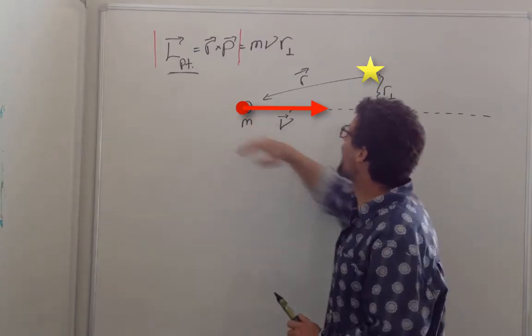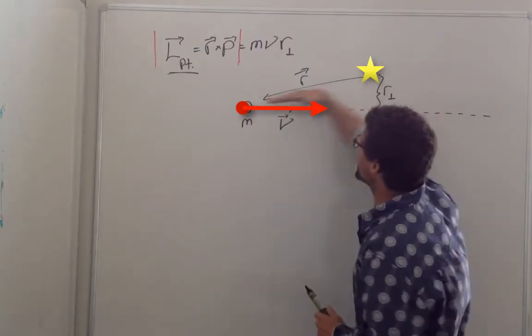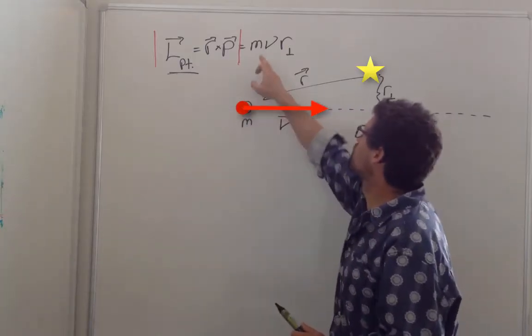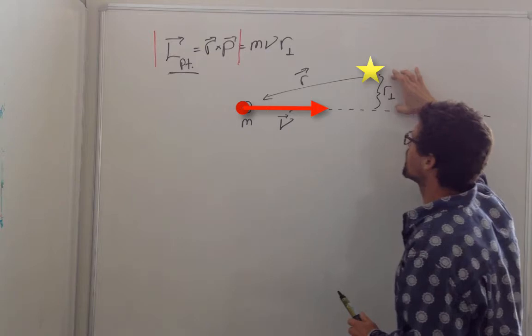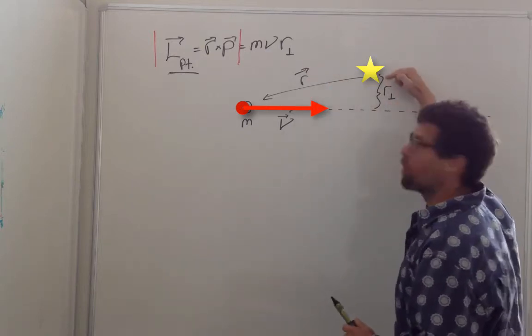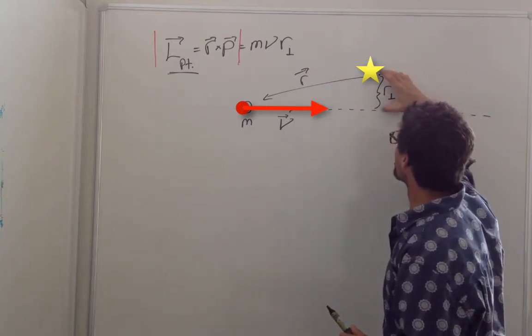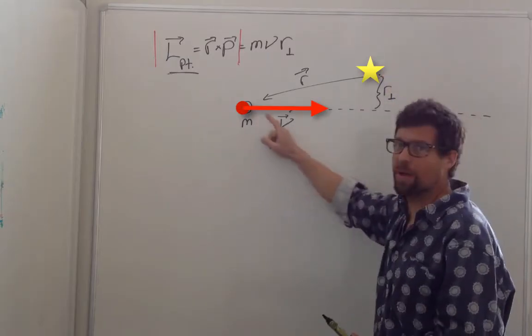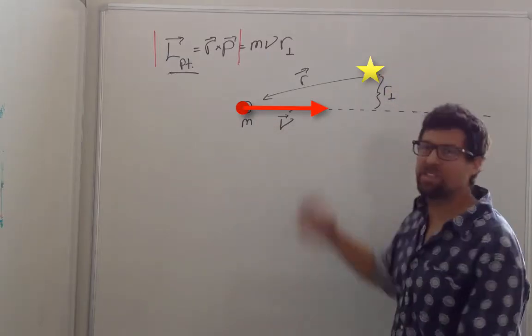then the angular momentum is the cross product of radius across the momentum of the particle. Or the absolute value of this is equal to m v r perpendicular, where r perpendicular is what we call the impact parameter, or the perpendicular distance from the center point to the straight line path of the particle.